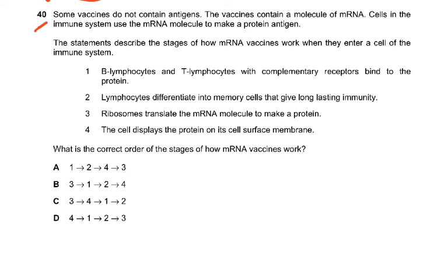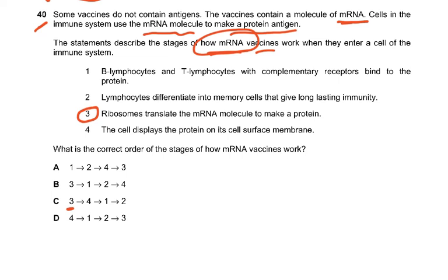Question 40. Some vaccines do not contain antigens; instead they contain mRNA — as in the COVID vaccine. Cells of the immune system use the mRNA to make a protein antigen. The correct order of stages is: first, ribosomes translate the mRNA into a protein; then, the cell displays the protein on its cell surface membrane; then, B and T lymphocytes with complementary receptors bind to the protein; finally, lymphocytes differentiate into memory cells giving lasting immunity. So the answer is C.